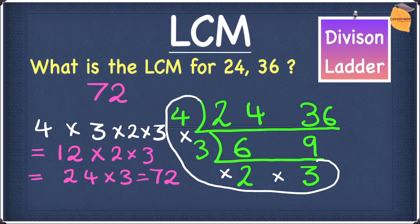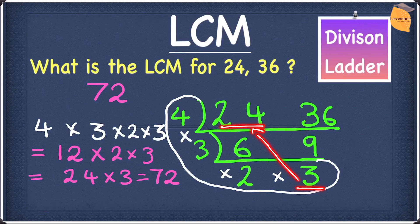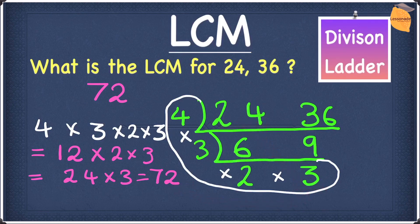Let's check if this is right. Two times thirty-six gives seventy-two — yes it does. And three times twenty-four — does it also give you seventy-two? Yes it does. So we can safely say the LCM to this question is seventy-two. I hope you guys understood everything so far.